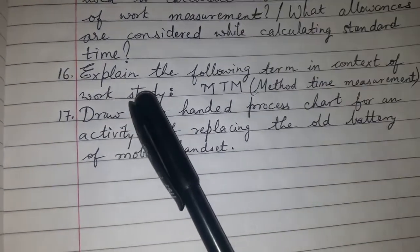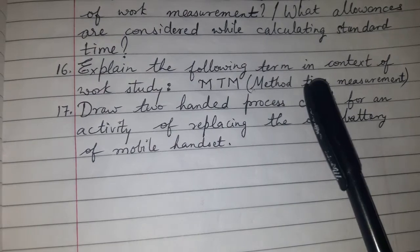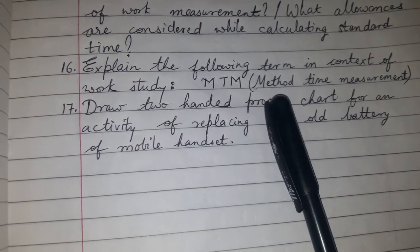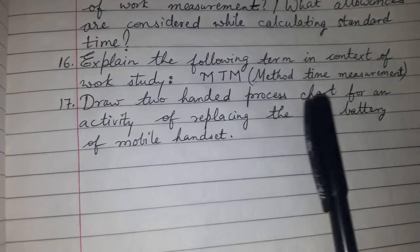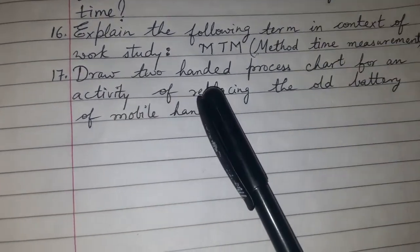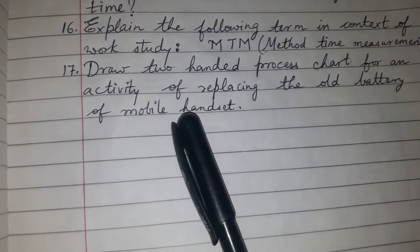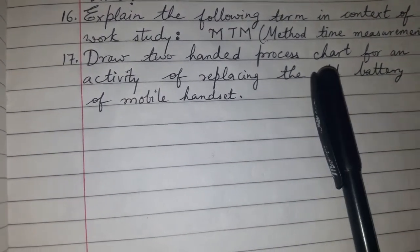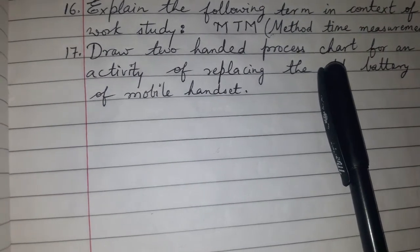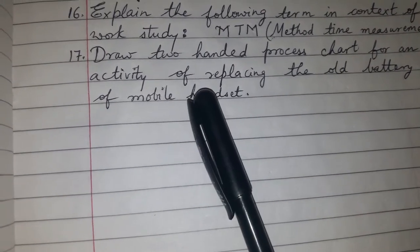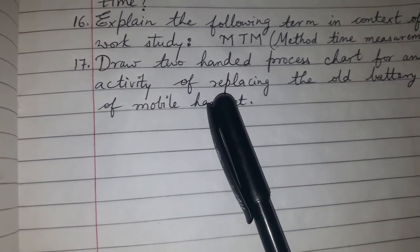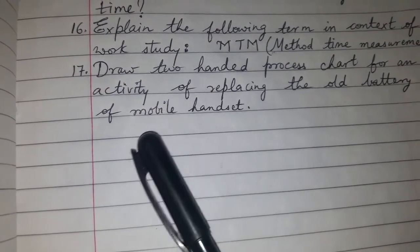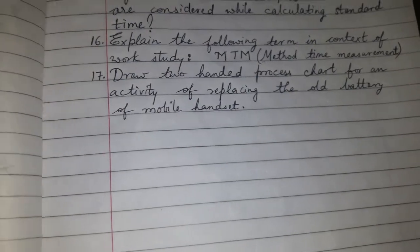Question 16: Explain the following term in context of work study — MTM, that is Method Time Measurement. Question 17: Draw a two-handed process chart for the activity of replacing the old battery of a mobile set. Here also a process chart is asked for a particular activity, so please review how process charts are prepared — for any given activity you should be able to prepare one.